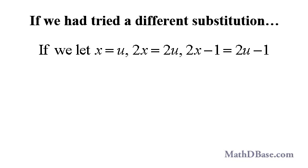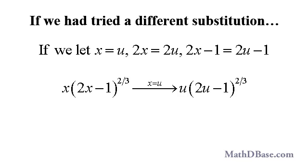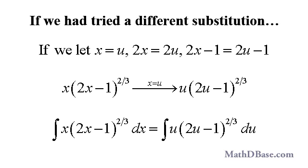If we had said let x equal u, then we would have had 2x equal to 2u, and 2x minus 1 would be equal to 2u minus 1. So after that substitution, we would have had u multiplying the quantity 2u minus 1 to the two-thirds, which is the same as the original integral with u as the variable instead of x.